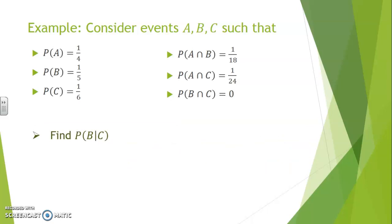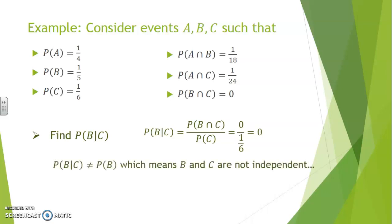Finally, let's look at the pair B conditional to C. The probability of B conditional to C is the ratio of the probability of the intersection of B and C over P of C. Now B and C cannot occur together, so the probability of their intersection is 0. Therefore P of B conditional to C cannot equal P of B, which means B and C are not independent. In fact, these are mutually exclusive events — the fact that C is occurring prevents B from having any chance of occurring.